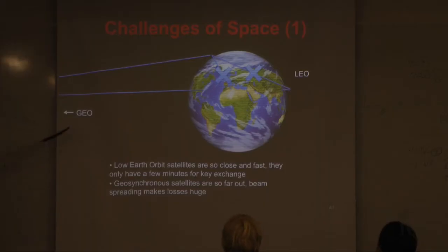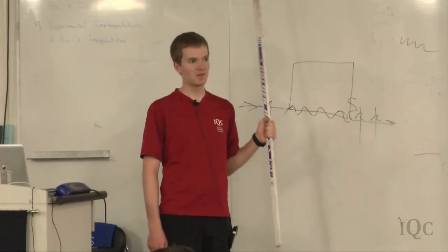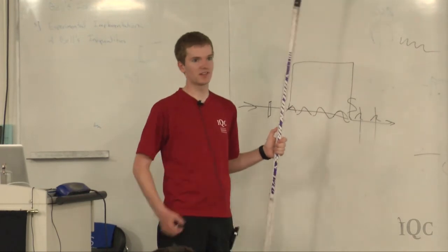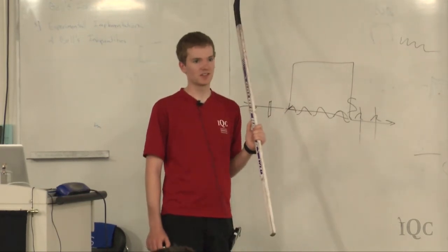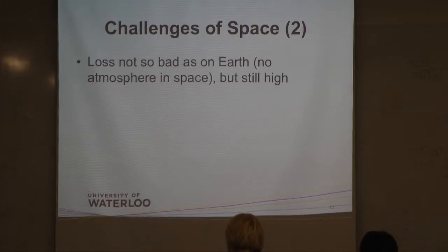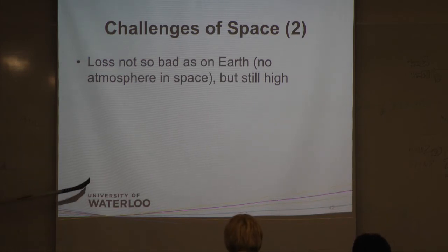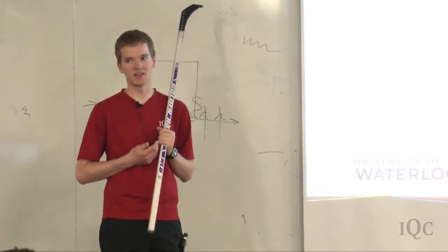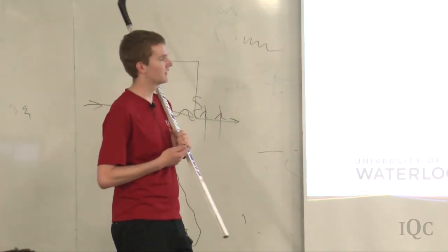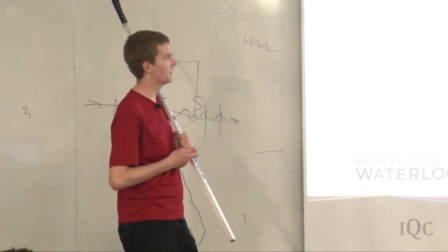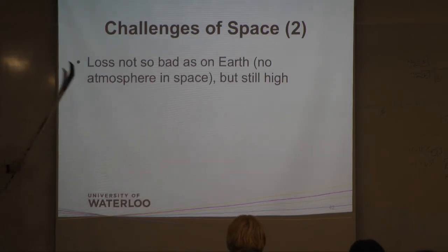We calculated that for a geostationary satellite at 36,000 kilometers, it would take about 10 days just to get your first secure key bit across - that's pretty slow. Even at 500 kilometers, the farthest QKD demonstration so far was about 200 kilometers, so it's still hard. But there's no atmosphere in space, so there's some hope.